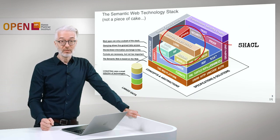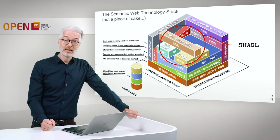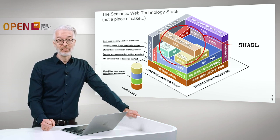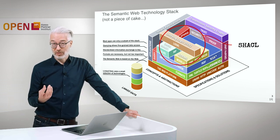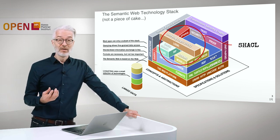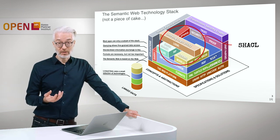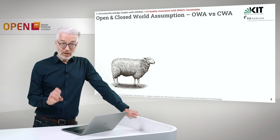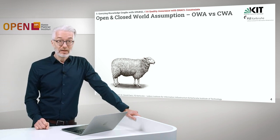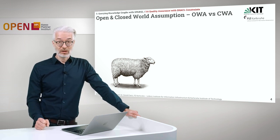SHACL is in the Semantic Web Technology Stack somewhere in the upper part, because it covers things like SPARQL, it covers models that you are using there, and it covers some kind of logic. What you want to find out via SHACL is whether your graphs are complete and whether there are no errors or duplicates. But first of all, we have to look again at the open and closed world assumptions, because they are really important for Semantic Web Technologies.